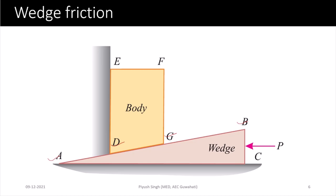As the wedge moves below the object, the body tends to move upwards, so the frictional force between the wall and side ED of the body will act downwards on the body. There will also be relative motion between the body and the wedge along side BG and AB.